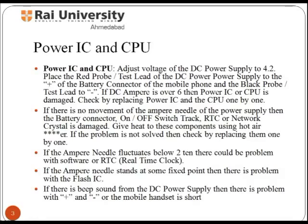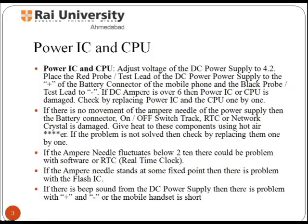Power IC supplies current to the whole part of the phone, and this supply can only work if there is a battery. The full form of CPU is Central Processing Unit. The performance of the CPU, which is at the core of the chipset, is vital for the daily user experience and general computing performance of the smartphone. It controls all sections of the mobile phone.